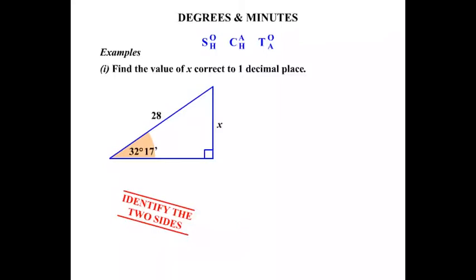So let's get back. Identifying the sides, we have x which is directly opposite the angle. And then we have the 28 which is the longer side, so it's the hypotenuse. So opposite and hypotenuse, we're going to be using sine. So we're using sine, the angle is 32 degrees, 17 minutes, so let's write that down. The sine of 32 degrees, 17 minutes, that equals the opposite over the hypotenuse. So it will equal x over 28.